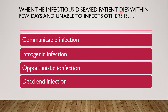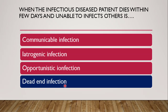Next question: when an infectious disease patient dies within a few days and is unable to infect others, this is known as dead-end infection. For example, in rabies, when a patient dies, that patient is not able to spread the disease to other persons. The infection ends with that person, so it is a dead-end infection.